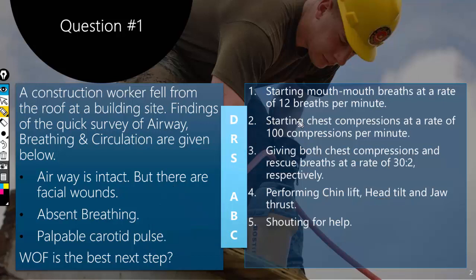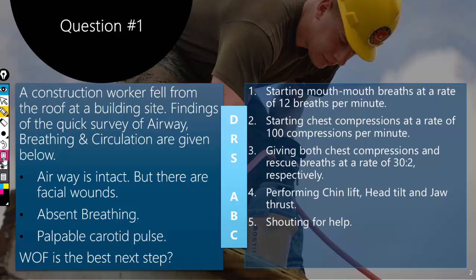The first statement: start mouth-to-mouth breaths at a rate of 12 breaths per minute. This statement is correct. The patient is not breathing, so we have to offer rescue breaths. The correct rate is 12 breaths per minute when you are not giving simultaneous chest compressions. The first answer is correct.